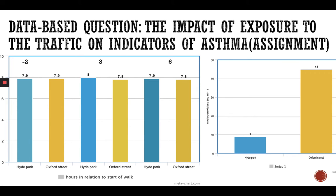You have a database question about the impact of exposure to traffic on indicators of asthma. There is a comparison between Hyde Park — a park full of trees — and Oxford Street, which is a place with a lot of traffic. What is your pH level before visiting, and what happens to your pH level within three to six hours after? Also, what happens to myeloperoxidase, which is very harmful to our body and lungs? Levels in Hyde Park are lower than in Oxford Street. This will be your assignment — discuss what you see in the graph.